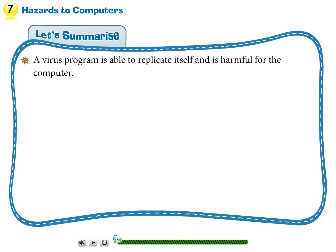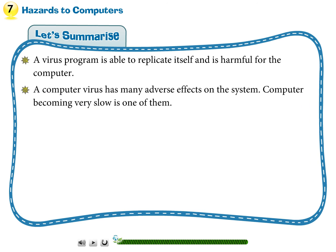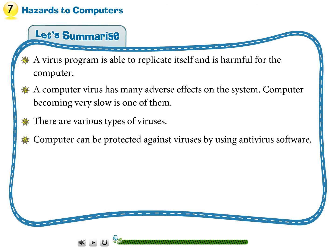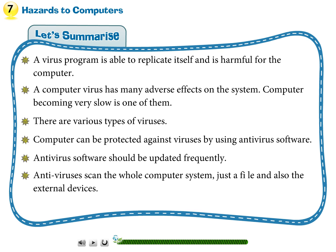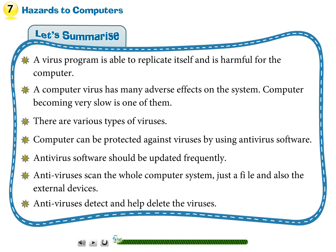Summary: A virus program is able to replicate itself and is harmful for the computer, with many adverse effects including making the computer very slow. There are various types of viruses. Computers can be protected against viruses by using antivirus software, which should be updated frequently. Antivirus software scans the whole computer system, individual files, and external devices, and helps detect and delete viruses.